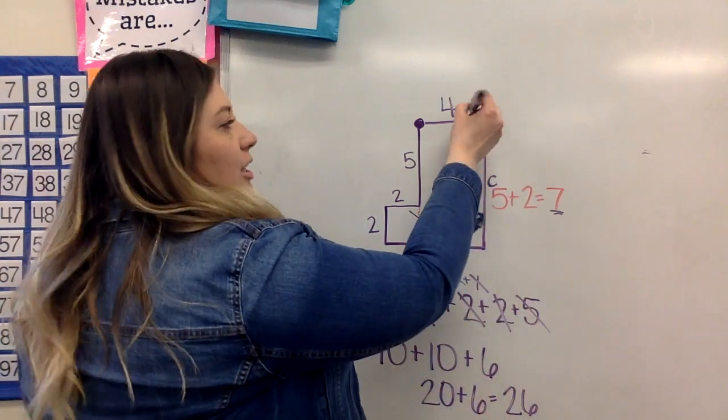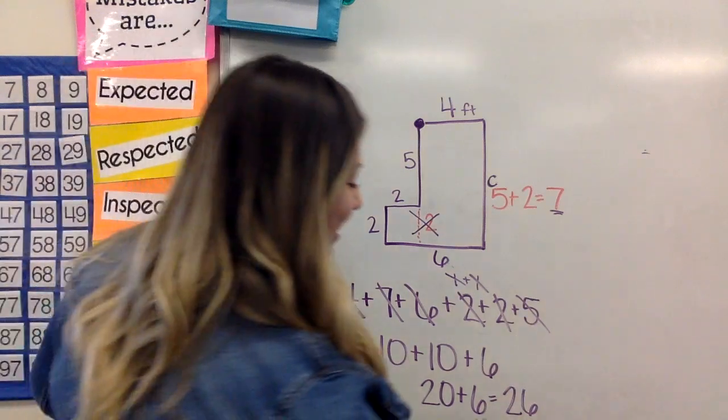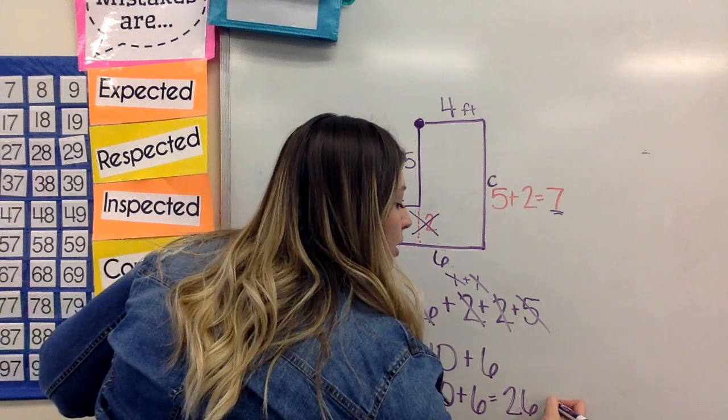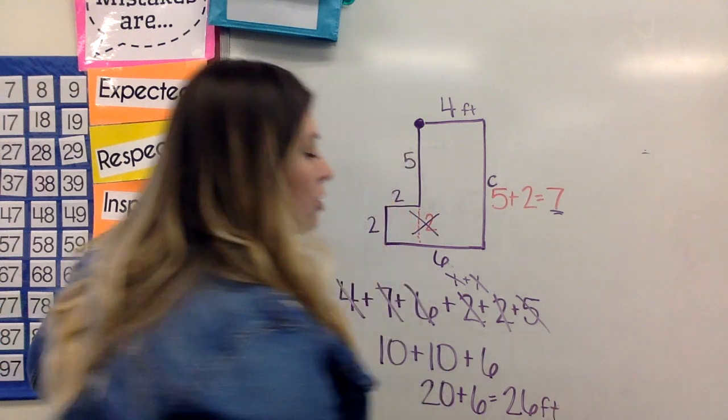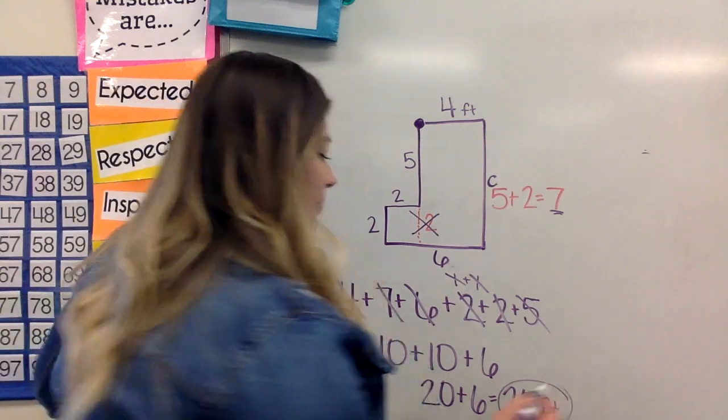And I'm going to pretend that at the beginning of this, I had my units on there, because I keep forgetting to put those on. So my unit measurement is feet, so my label that I put on my answer is going to be feet. 26 feet is the perimeter of the shape. All right.